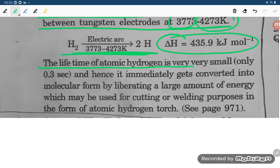The lifetime of atomic hydrogen is very small, only 0.3 seconds. Hence, it immediately gets converted into molecular hydrogen by liberating a large amount of energy which may be used for cutting or welding purposes in the form of atomic hydrogen torch. Okay, so this is what happens.